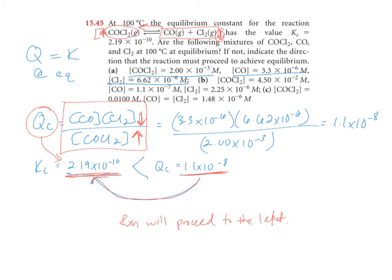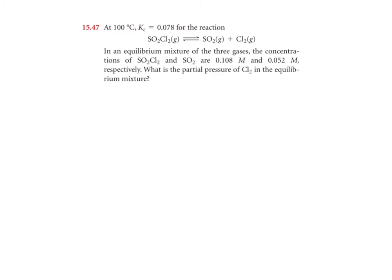So the reaction will proceed to the left, favoring phosgene, which is COCl2, and increasing its concentration as it reaches equilibrium. So that is how you would analyze A, B, and C. I'm only going to do A here, because B and C are just other examples of the same thing.